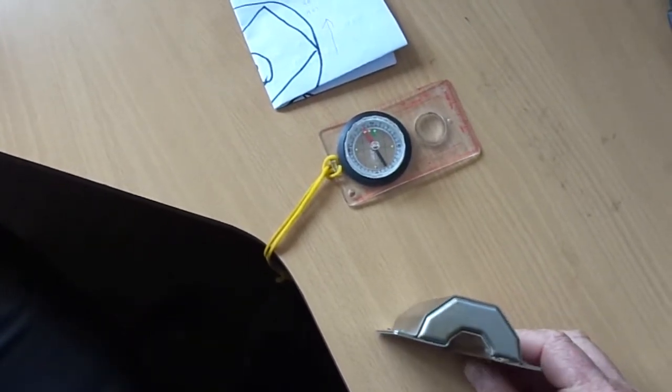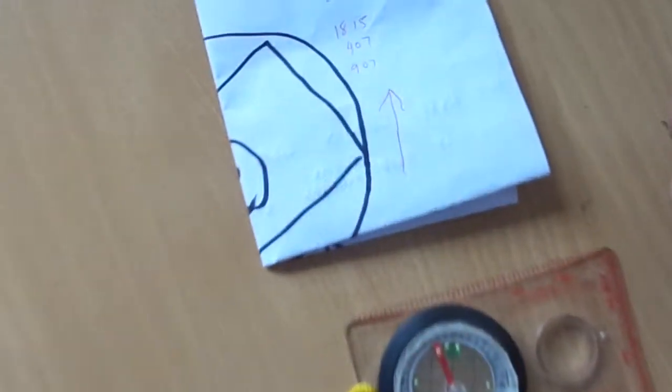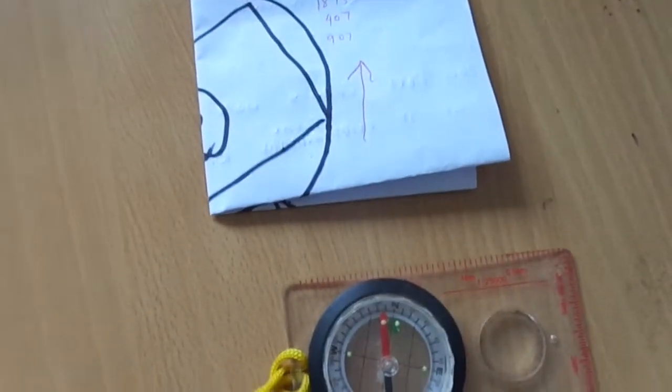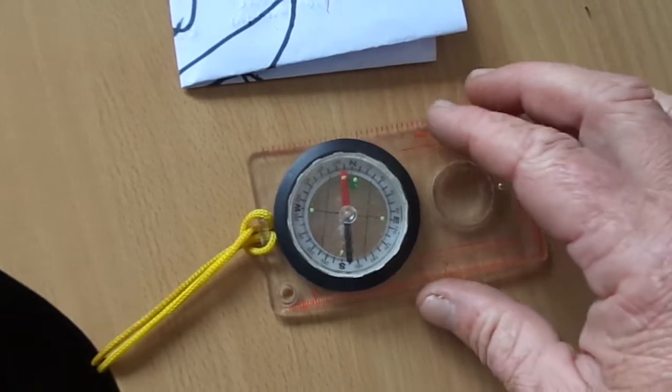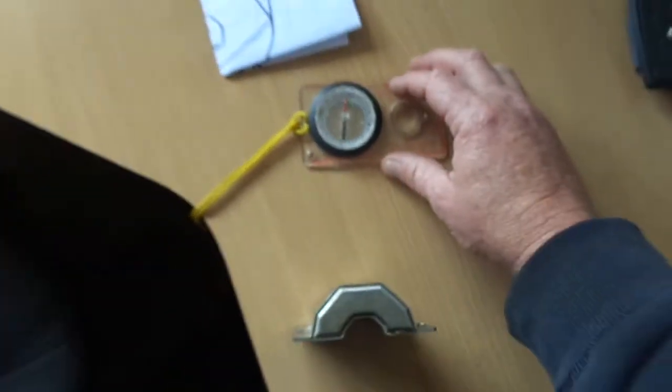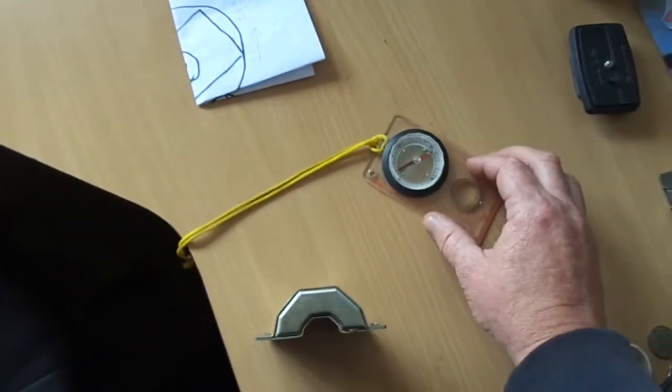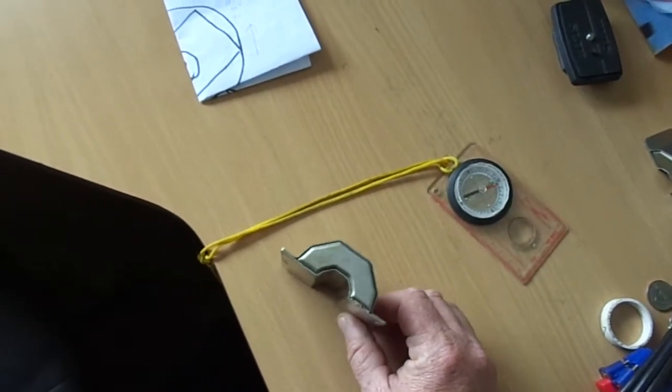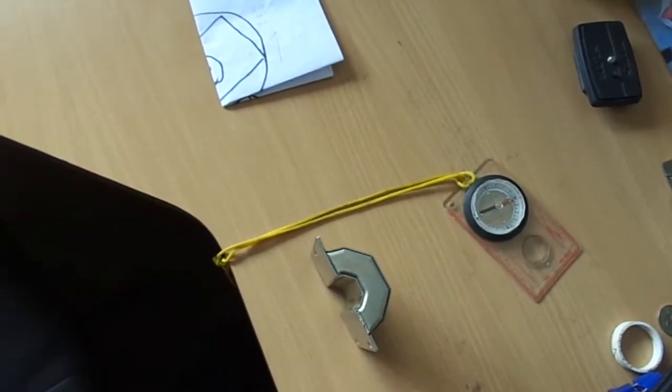For an example, I have drawn a line to show where north is. If we move the compass over to here and it's attracted to the south magnet, well guess what?